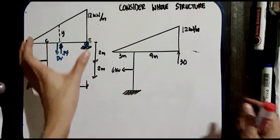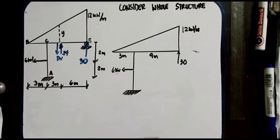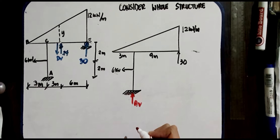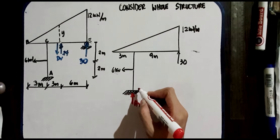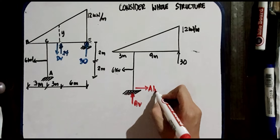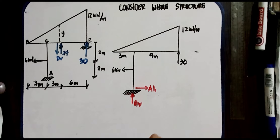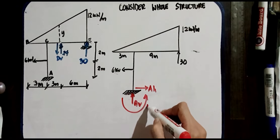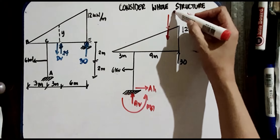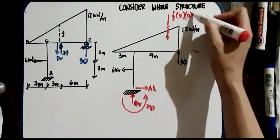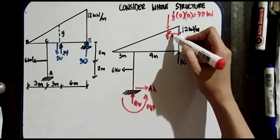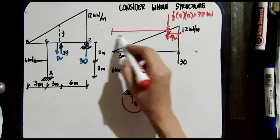Now consider the whole structure. Point A is a fixed support, meaning it has 3 reactions: horizontal, vertical, and moment. We assume a direction for AH. The resultant of the triangular load is 1/2 × 12 × 12 = 72 kN. The location is 1/3 of 12 = 4 meters from the tip, and 2/3 of 12 = 8 meters. From our reference point, the distance is 8 − 3 = 5 meters.